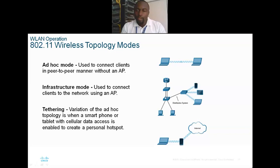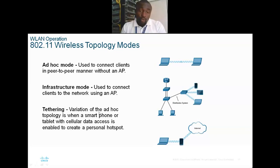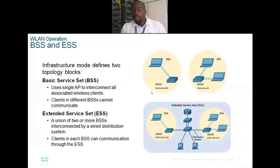Then you have infrastructure mode, which connects clients to a network where you have a router, a switch, and access points — either controller-based or autonomous — connected to the switch, which broadcasts the SSID for wireless devices to connect. Then you have tethering, which is for smartphones sharing a hotspot: your phone has an internet connection from its SIM card and generates a hotspot for your laptop or other devices.